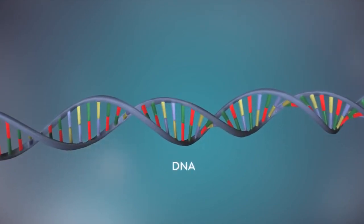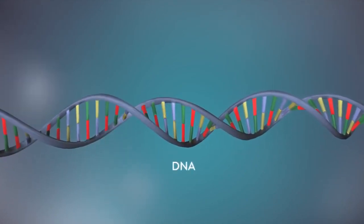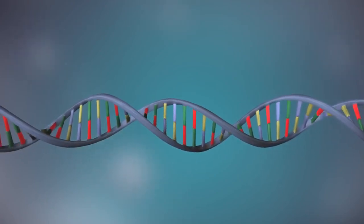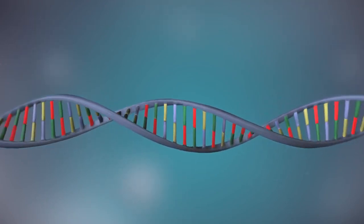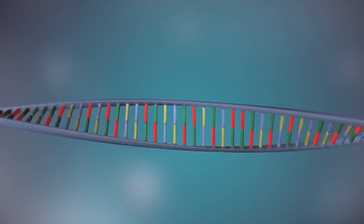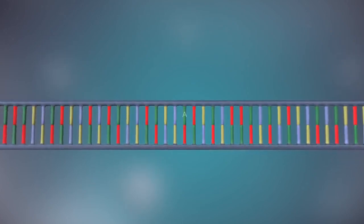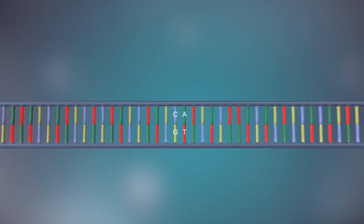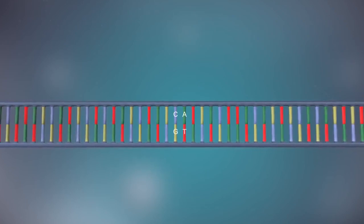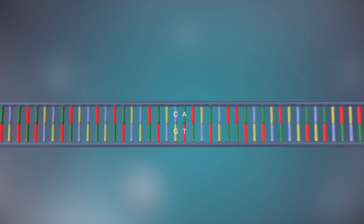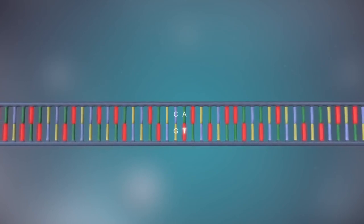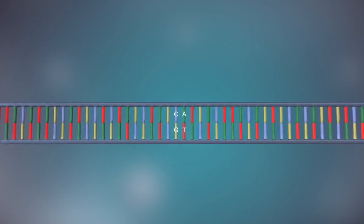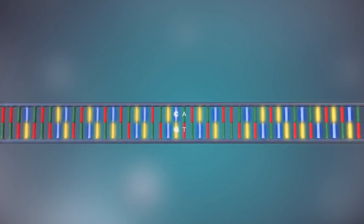DNA is a molecule made up of two strands twisted around each other in a double helix shape. Each strand is made up of a sequence of four chemical bases represented by the letters A, C, G and T. The two strands are complementary. This means that wherever there's a T in one strand there will be an A in the opposite strand, and wherever there's a C there will be a G in the other strand.